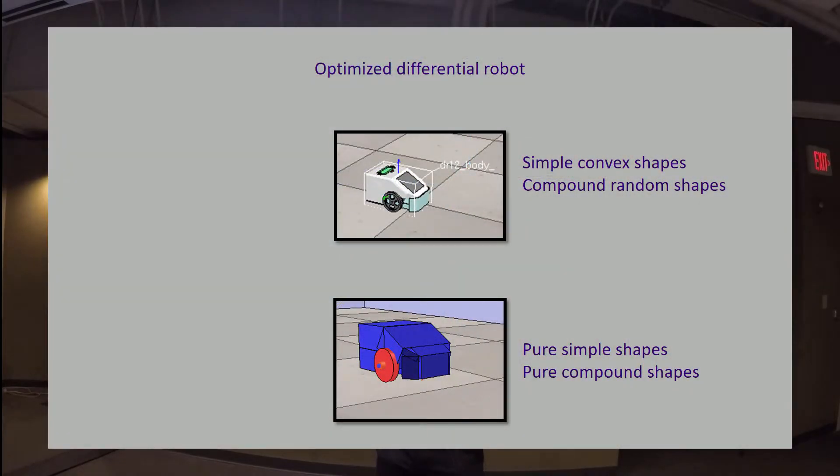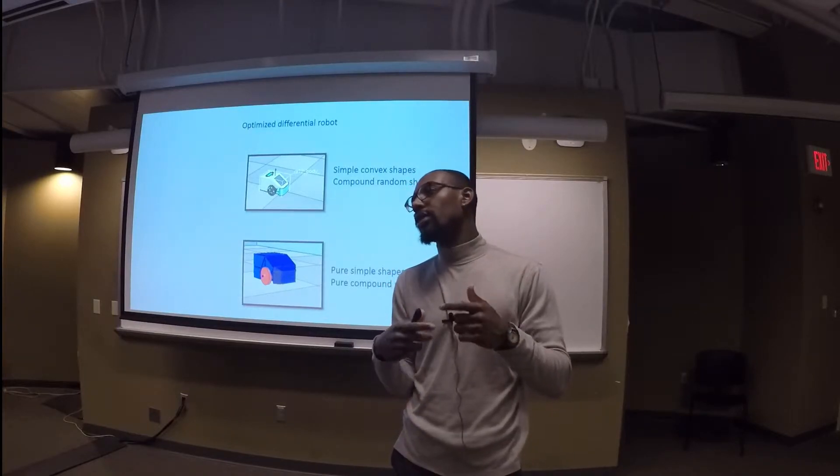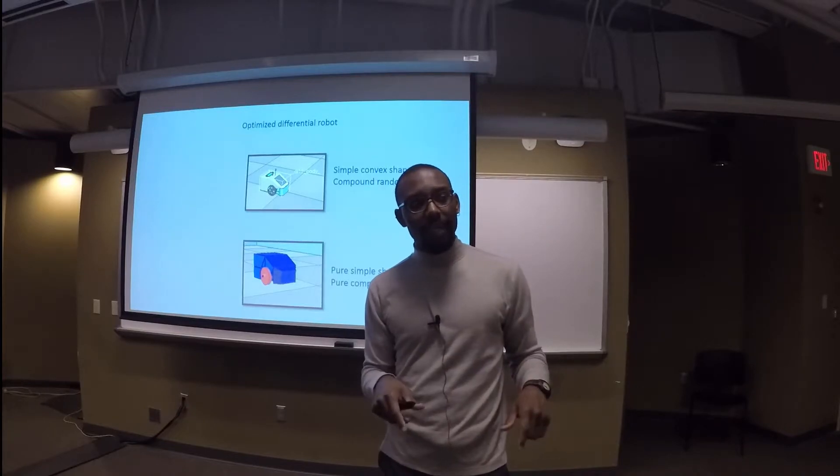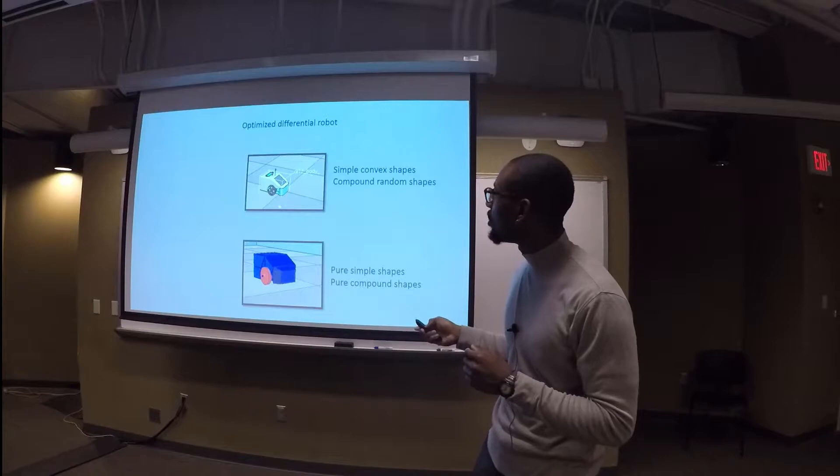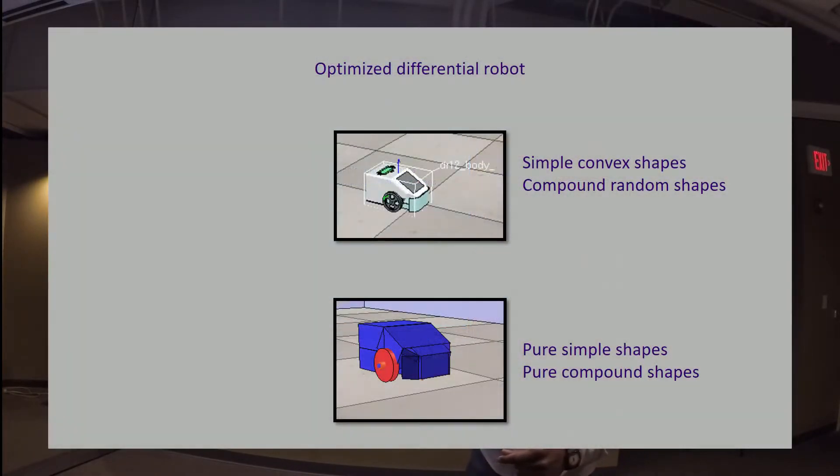The approach is to take this differential drive robot, commercially available, called the DR-12, inside of VREP and do these simulations with MATLAB. This DR-12 robot is actually made of all these complex shapes—simple convex shapes and compound random shapes. When you simulate it in MATLAB, the simulation runs extraordinarily slow. VREP is trying to simulate all these advanced features: the spokes in the wheels, screens, buttons, and displays. But if you transform the differential drive robot to pure simple shapes and pure compound shapes, the CAD model is not quite as pretty, but the dynamics handle those types of shapes a lot easier, and your simulation is a lot more accurate and faster.